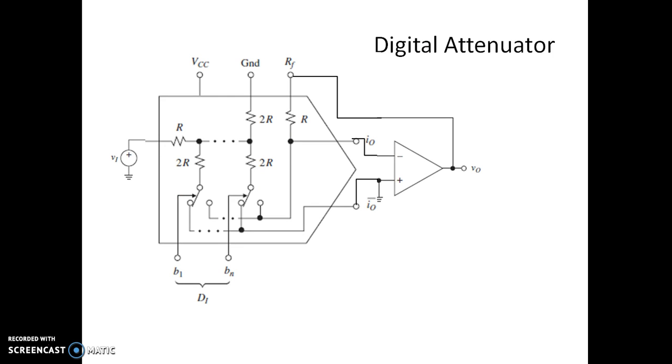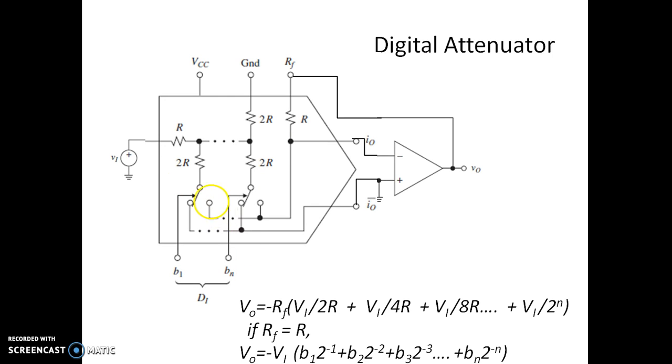This is the circuit diagram of a digital attenuator. We know that the output voltage V_O is given by minus RF into the current I_O. So we know that I_O is given by V1/2R plus V1/4R plus V1/8R and so on. This V1 you can take out and V1 in this particular case happens to be the input voltage. So we can write if RF is equal to R,